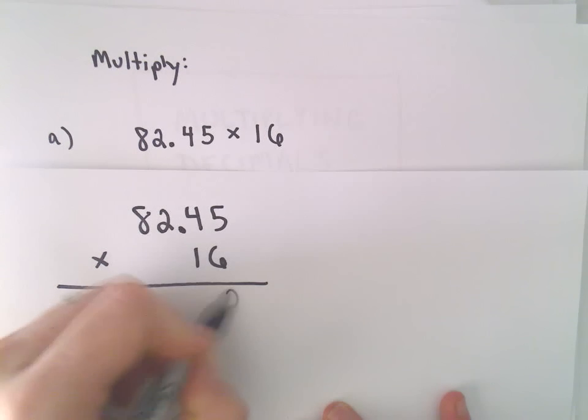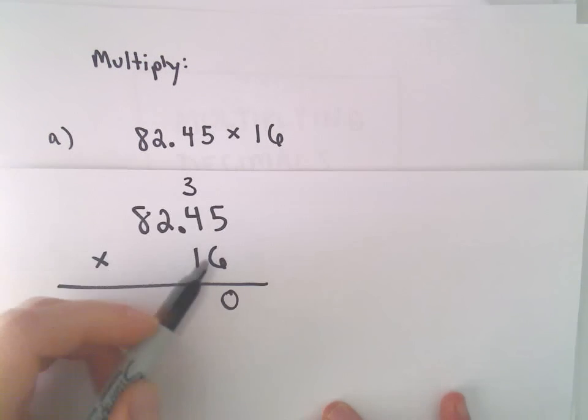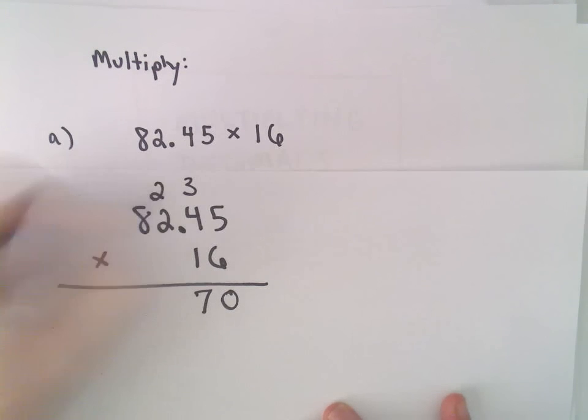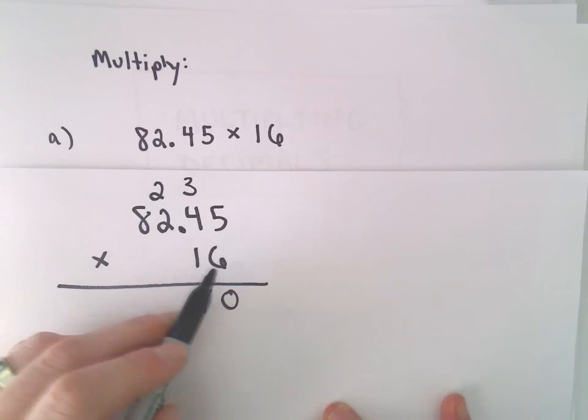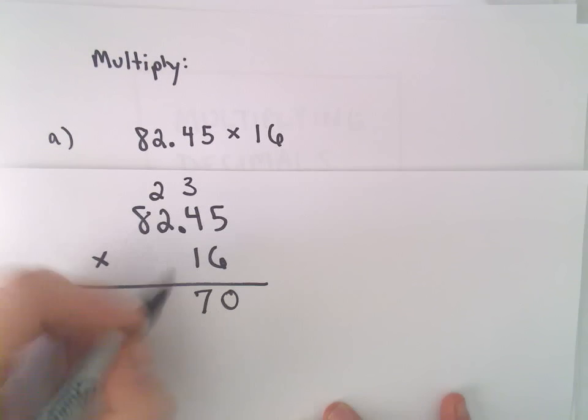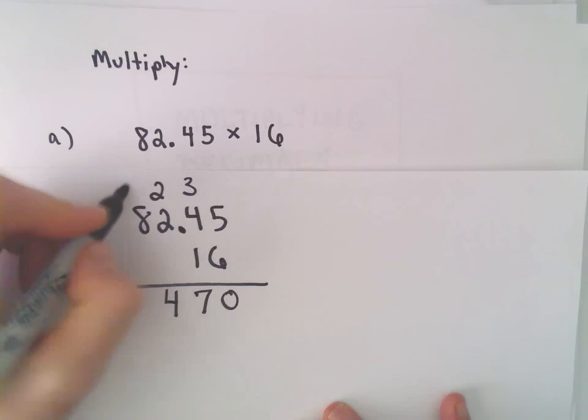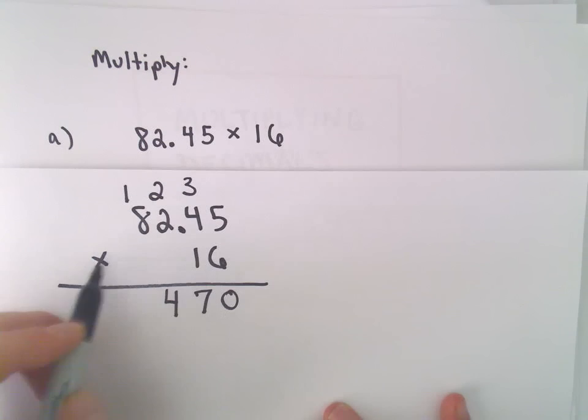So 6 times 5 is 30, so we'll keep the 0, carry the 3. 6 times 4 is 24, plus 3 will be 27, so we'll keep the 7, carry the 2. 6 times 2 is 12, plus 2 is 14, so we'll keep the 4, carry the 1. 6 times 8 is 48, plus 1 will be 49.